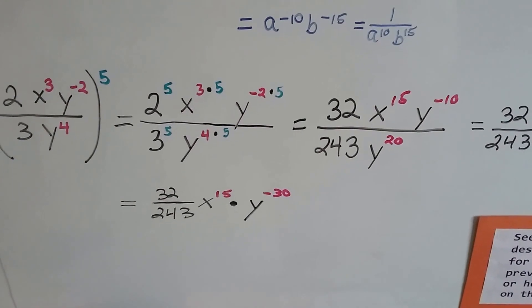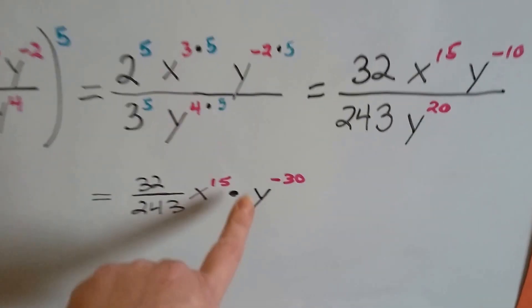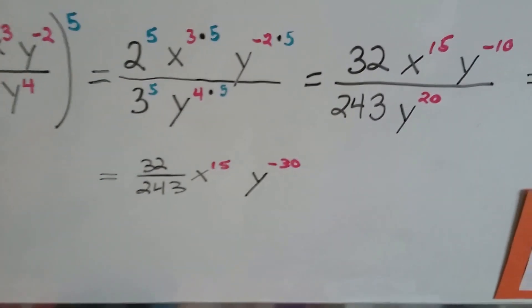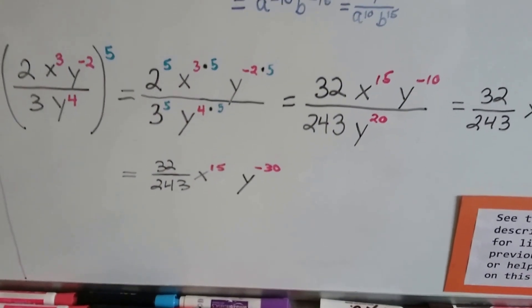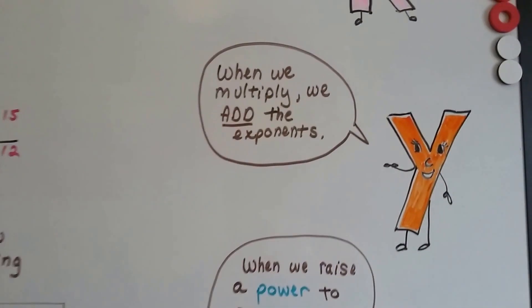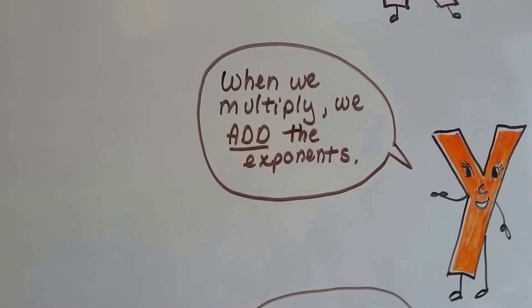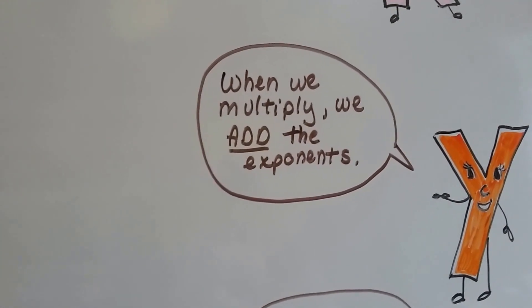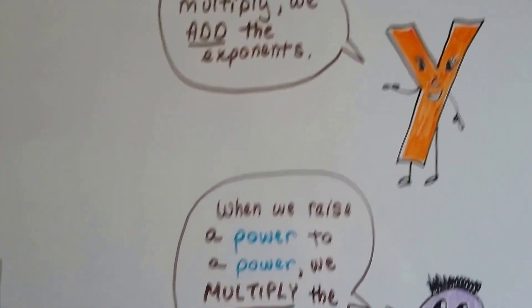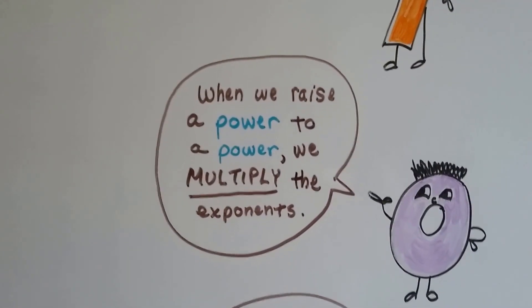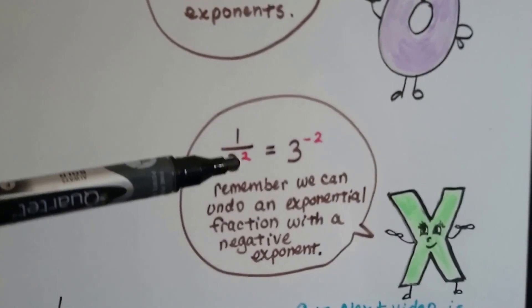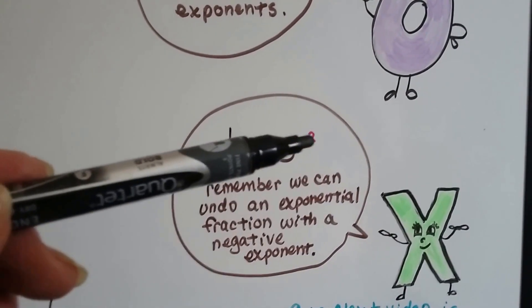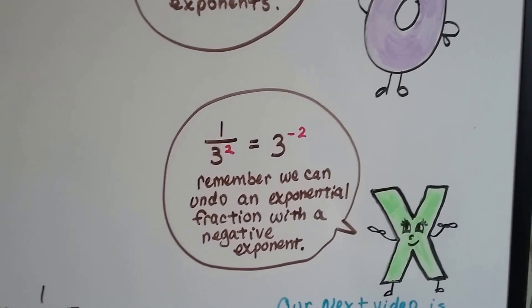We can even take out the multiplication sign because that's not really needed. We could just write them next to each other. So when we multiply like bases, we add the exponents — they have to be like bases. And when we raise a power to a power, we multiply the exponents. We can undo a fraction by writing a negative sign in front of that exponent.